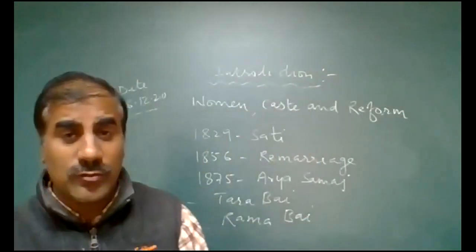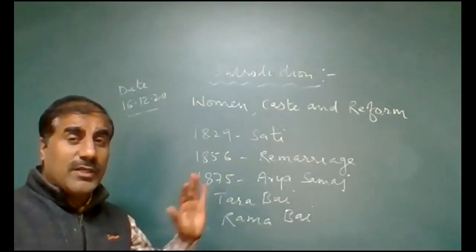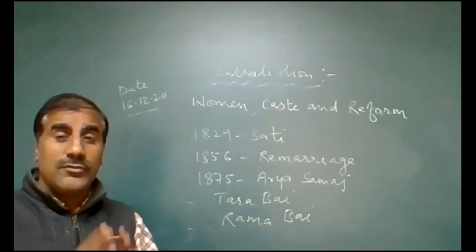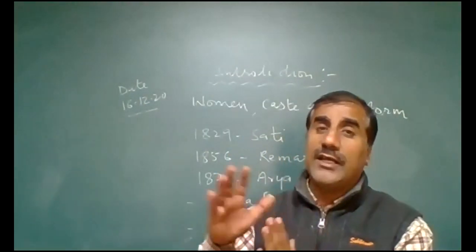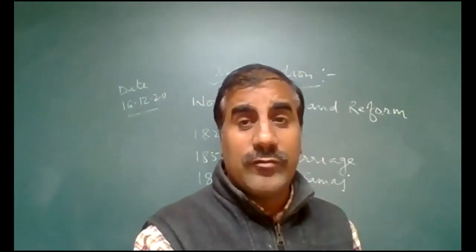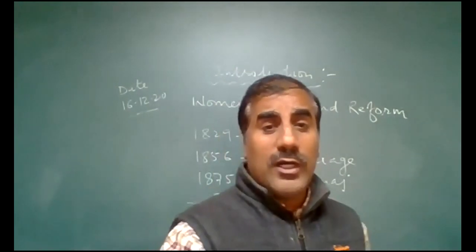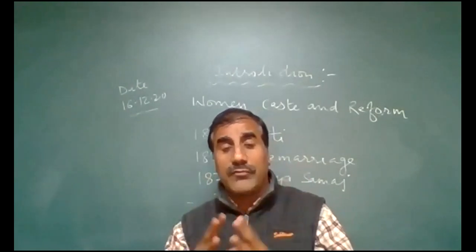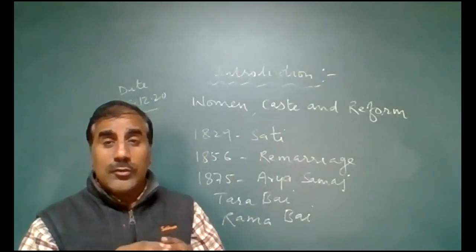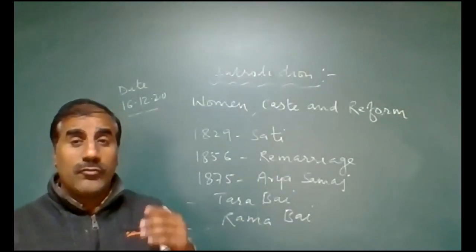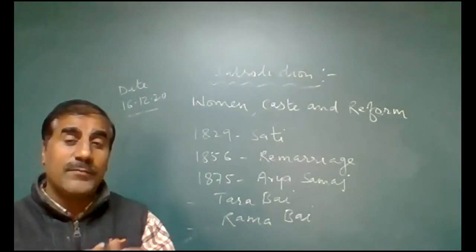Before starting the chapter, today we will discuss only the introduction. This chapter is also co-related with your study in Class 7, Chapter 4 — Growing Up Boys and Girls — where we discussed how society makes a clear distinction between boys and girls. During birthdays, for example, different types of toys are given to boys and girls.